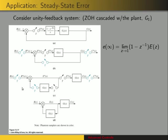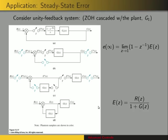Now we can take the Z-transform of all these, so we have R of Z, E of Z, G of Z, C of Z, and again G of Z. In this block diagram we see that E of Z is equal to R of Z minus E of Z times G of Z. So that says R of Z is equal to E of Z plus E of Z times G of Z.